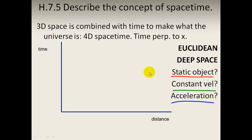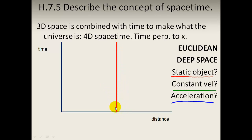Let's take a static object which is at rest. It looks like a line which moves upwards with time while the distance stays in the same position — so this is a line showing a static object in Euclidean four-dimensional space-time. What if it has a constant velocity? With time it moves upwards again, but at an angle, because the distance is changing with respect to time.